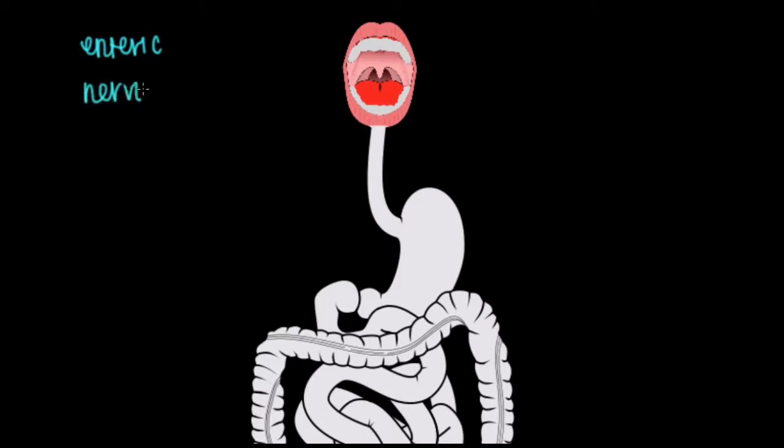The enteric nervous system, because the GI tract is able to act on its own without having to send neuronal information or signals to the brain or the spinal cord to regulate its action.